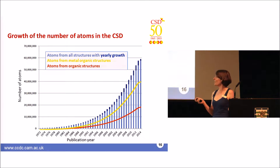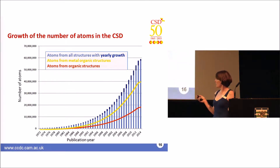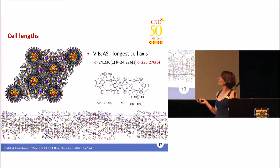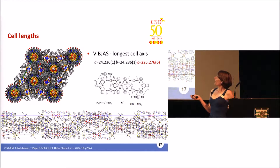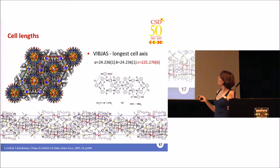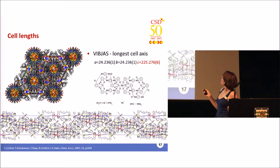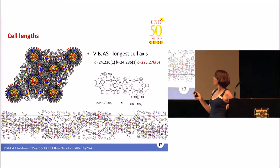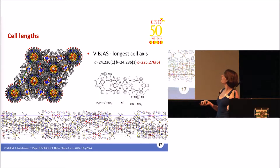Private communications are obviously increasing at a much faster rate than the overall number of structures in the CSD. Another thing we can look at is unit cells — the prize for the structure with the largest cell length goes to BIBJAS, with a whopping 225 ångström unit cell value. It was so big it only just fitted on my slide.